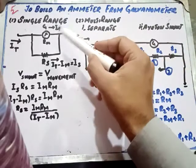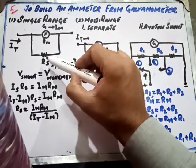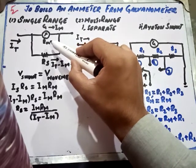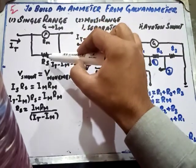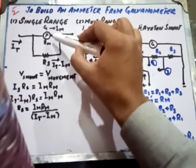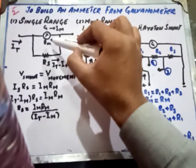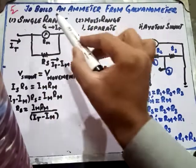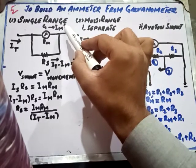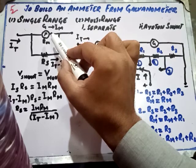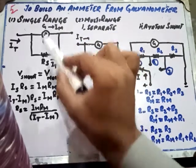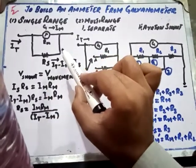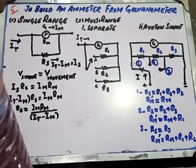First, we discuss the single range ammeter using the galvanometer. The figure shows a low value of resistance RS (shunt resistance) connected in parallel with the galvanometer, whose internal resistance is represented as RM. If IT is the total current entering at this point, IM is the full scale deflection current responsible for full scale deflection on the galvanometer dial. The remaining current, IT minus IM, flows through the shunt resistor RS.